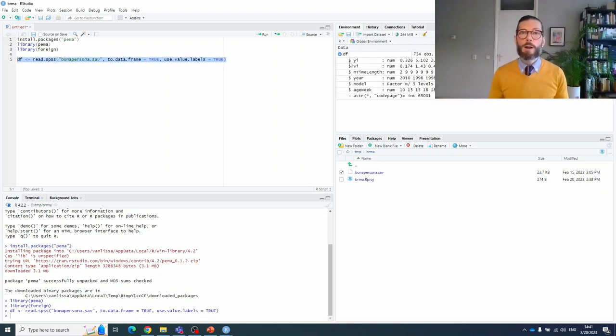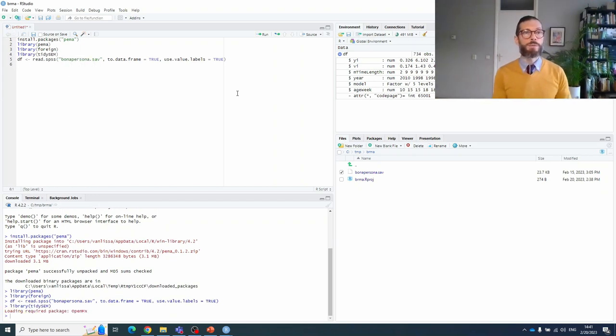Now we have the object in our environment. We see that the effect size is there. Its variance is there. There's a few moderators, including year of publication. And there are two different data types, numeric and factor. So we have categorical as well as continuous predictors.